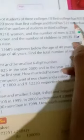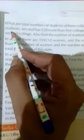What are the total number of students of 3 colleges? First college has 9,212 students. Second college has 320 more than 1st college, so 9,212 plus 320. Third college has 522 more than second college, so we need to find the number of students in third college and the total population.